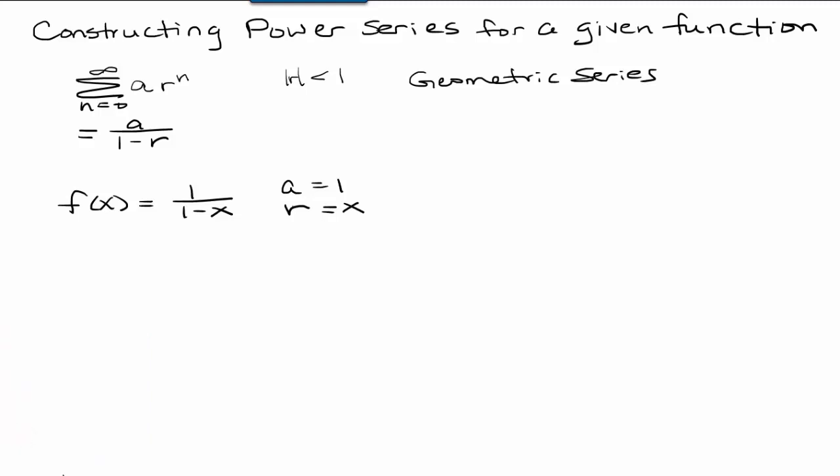The first thing we're going to look at is just to remind ourselves of the pattern that a geometric series follows. So anything of the form n equals 0 to infinity, a times r to the n is going to be a geometric series, which converges when the absolute value of r is less than 1. And in that case, it converges to a over 1 minus r.